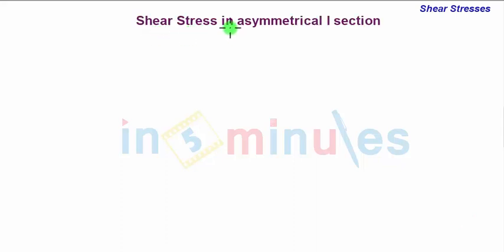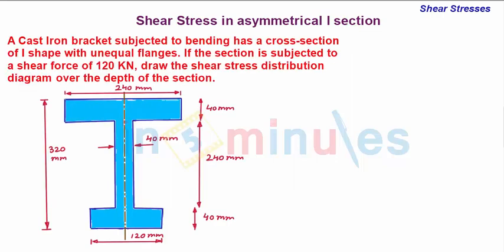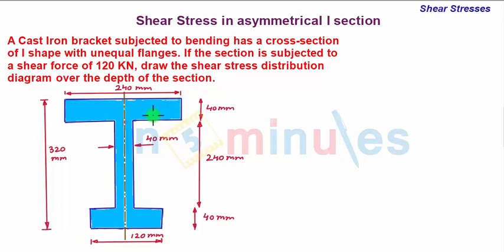Welcome to 'In 5 Minutes.' We take a problem on shear stress in an asymmetrical I-section. The problem statement: a cast-iron bracket subjected to bending has a cross-section of eye shape with unequal flanges. If the section is subjected to a shear force of 120 kilo Newton, draw the shear stress distribution diagram over the depth of the section. We have been given the cross-section of the bracket, which is an asymmetrical eye section.